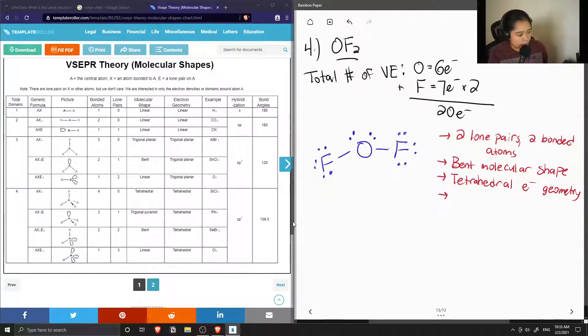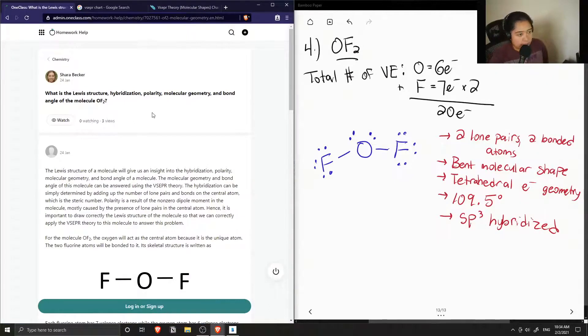The bond angles between tetrahedral shapes or electron geometries is around 109.5 degrees, and this means that our oxygen is sp3 hybridized.